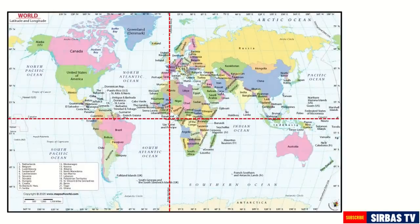Let us have another example. In this case, the country is given and your task is to find the coordinates. The country is Canada. What is its approximate coordinates? Look at the map. Your first step is to find the country. In this case, here is the location of Canada.